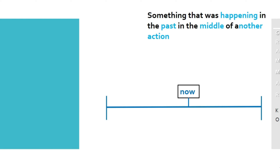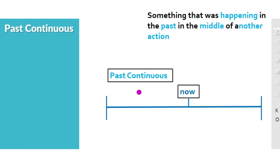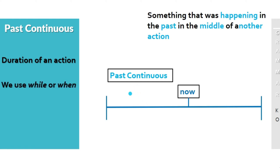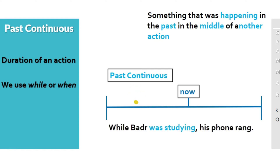Something that was happening in the past in the middle of another action is called the past continuous — it's a duration of an action. We also use 'while' or 'when.' For example: 'While Badr was studying, his phone rang.' This is something that was happening in the past in the middle of another action.